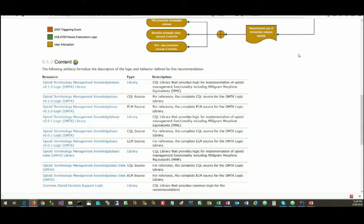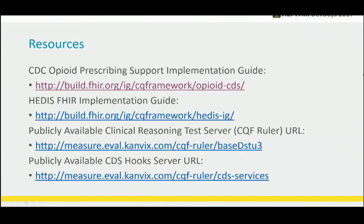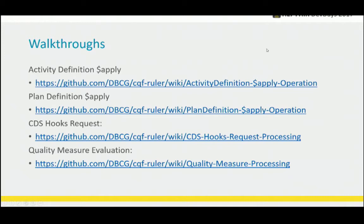There's also a HAPI FHIR implementation guide and a publicly available clinical reasoning test server. If you hit that, it's one of the servers you can post the plan definition to and it'll run. There's also a CDS Hooks server running on that endpoint — one of the ones we're using in the track. There are also walkthroughs on the wiki where you can step through all the components involved and get some code, as well as starter Java projects you can download, compile, and get the calculations running.